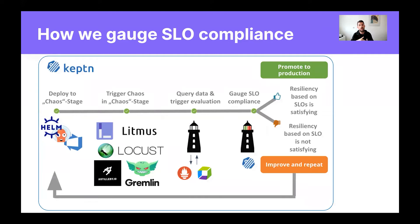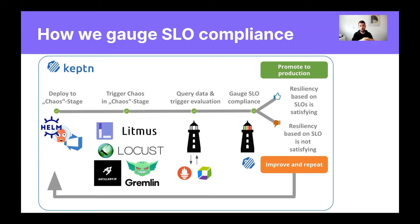I'm a maintainer of the Keptn project and we've implemented this idea in Keptn using a couple of different tools. We introduced a dedicated chaos stage in this demo implementation. In the chaos stage we deploy our applications using Helm, or you can use Argo CD or whatever you want. After the deployment is finished, we hit the application with some simulated green-world load — we are using Locust performance tests here — and we execute some chaos using Litmus Chaos, but you can exchange these tools with Artillery tests or Gremlin or whatever you're using. The idea is to execute both performance tests plus chaos at the same time on our applications.